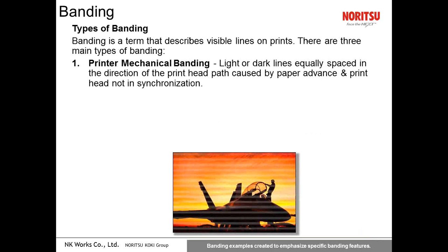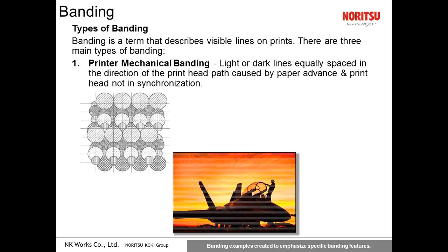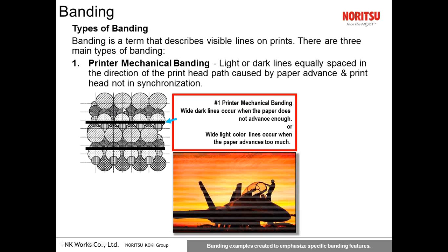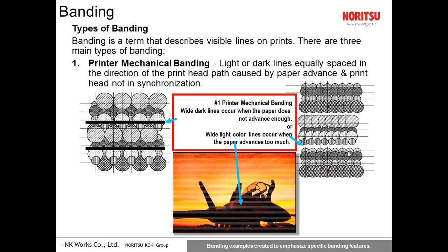There are three types of banding in photo printing. Mechanical banding is a light or dark band equally spaced within the print, caused by the paper advance and head transportation not being synchronized. A dark band occurs when the ink path overlaps with the next pass; a light band occurs when the paper advance is greater than it should be, creating a gap between passes. To reduce banding, the ink is sprayed in many passes over the same area.